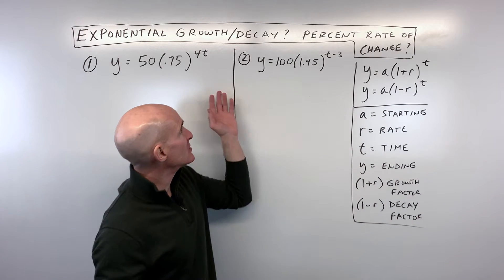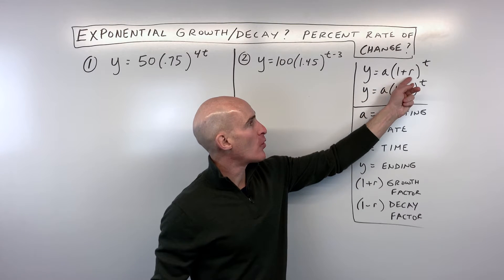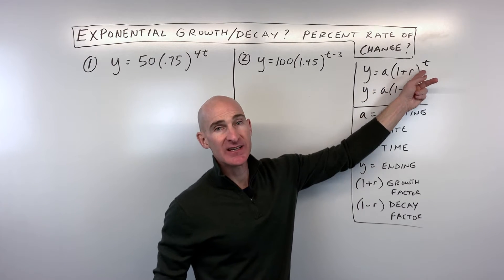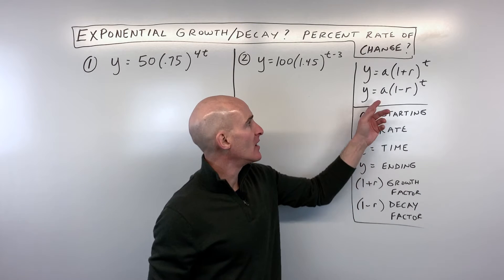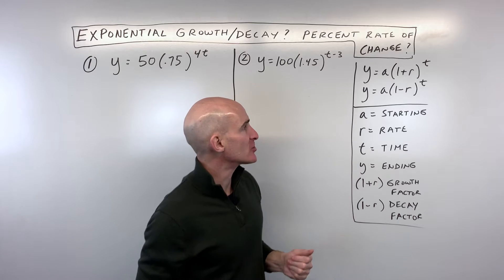So before we dive into these couple examples here, just a quick refresher. y = a(1+r)^t is our exponential growth function, y = a(1-r)^t, that's our exponential decay function.